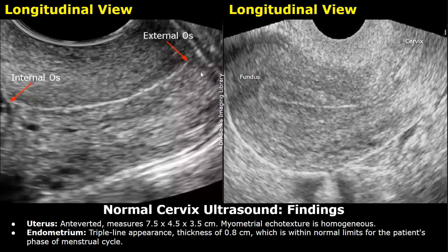After that you can write the findings, starting with the uterus. The uterus is anteverted, measuring 7.5 x 4.5 x 3.5 centimeters; myometrial echo texture is homogeneous. The endometrium shows a triple line appearance — three hyperechoic lines — which is normal. The endometrial thickness is 0.8 centimeters, within normal limits for the patient's phase of menstrual cycle.